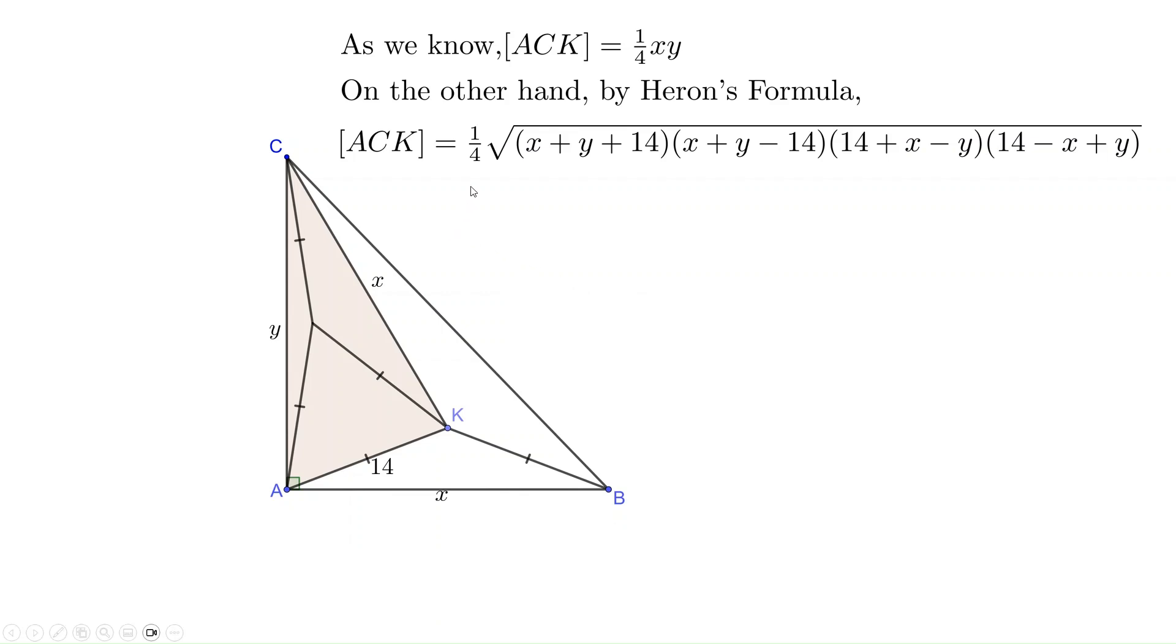The area of the triangle equals 1/4 times the square root of 4 factors. The first factor is the sum of three side lengths. The rest three factors are the sum of two sides minus the last one: x + y - 14, x + 14 - y, and 14 + y - x. Look at the first two factors: x + y + 14, x + y - 14. So the product equals (x + y)² - 14². Similarly, for the last two factors, 14 + x - y, 14 - x + y equals 14² - (x - y)².